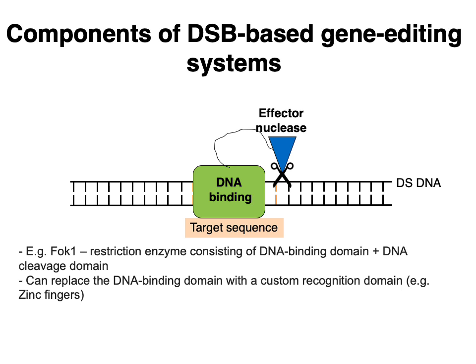Double-stranded break-based gene editing systems require three components: first, a nuclease that can cut double-stranded DNA; second, a DNA binding domain that the effector nuclease is tethered to, which brings the nuclease into close proximity to its target sequence; and third, some way of targeting a specific piece of DNA, either through transcription factor recognition domains or guide RNAs.